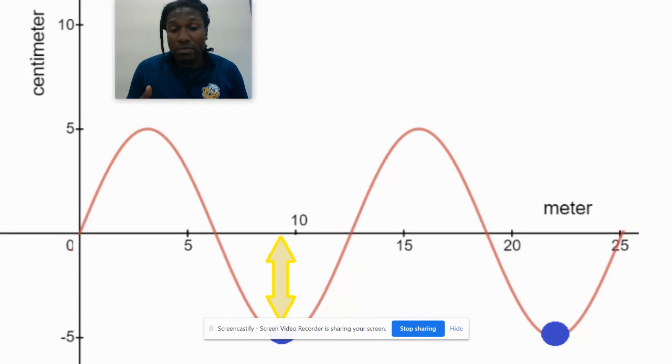From the trough to the equilibrium, this distance—keep in mind I keep saying distance, not displacement—this number cannot be negative. The distance here is five, so the amplitude is five.